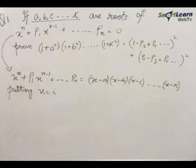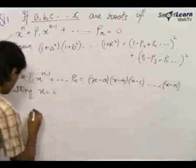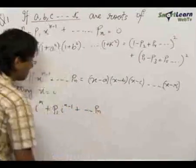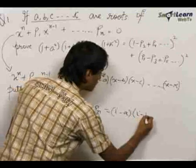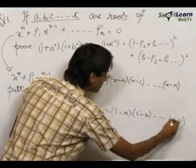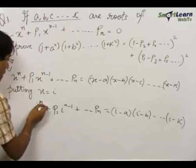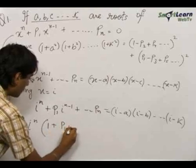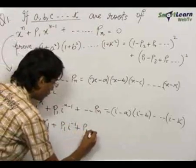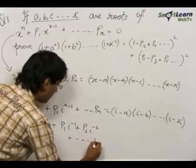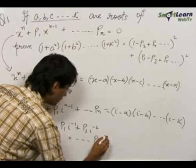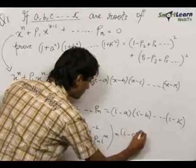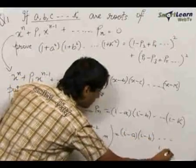Putting x = i (iota) in this expression, we get: i^n + p₁·i^(n-1) + ... + pₙ = (i−a)(i−b)...(i−k). Taking i^n common from the entire left-hand side expression, we get: i^n · [1 + p₁·i^(−1) + p₂·i^(−2) + ... + pₙ·i^(−n)] = (i−a)(i−b)...(i−k).